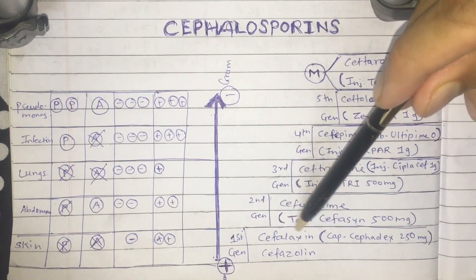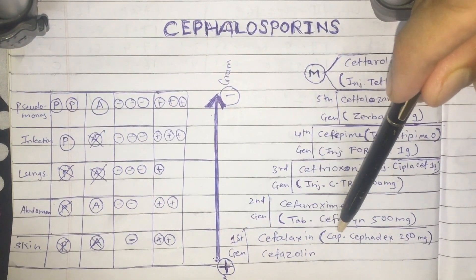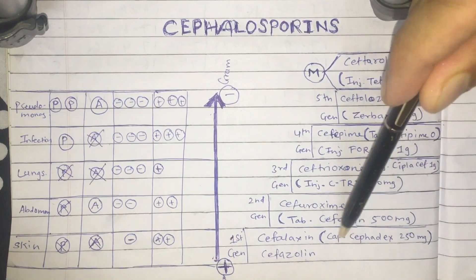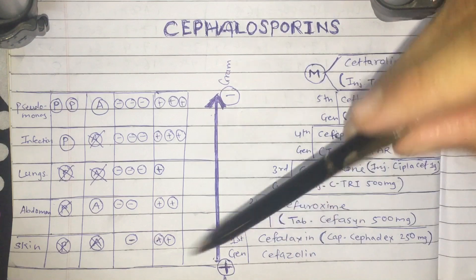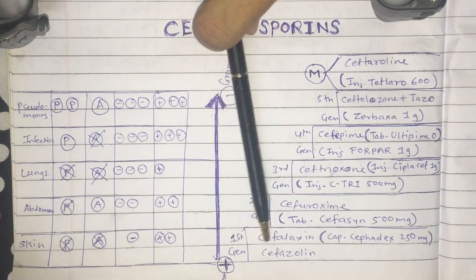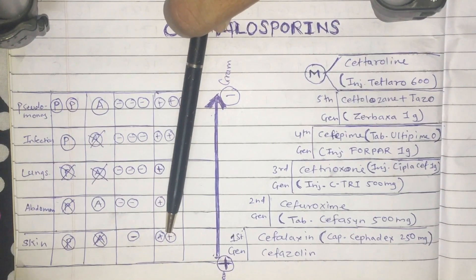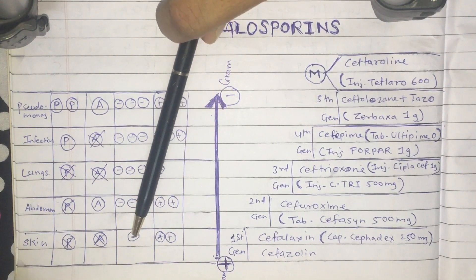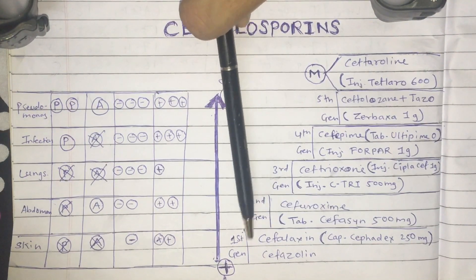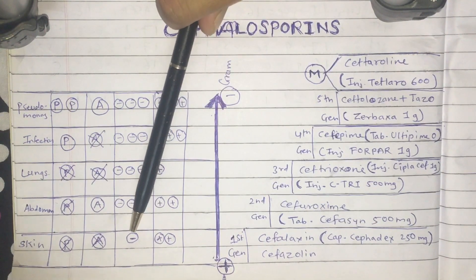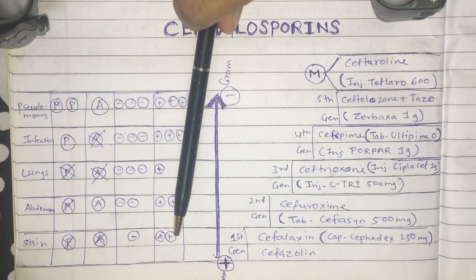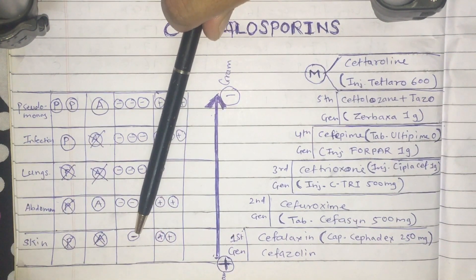For the first generation cephalosporins, we have Cephalexin, available as capsule Cephadex 250 mg for adults and 125 mg for children. The first generation cephalosporins show strong activity — indicated by two plus signs — against gram-positive bacteria, but have a negative sign for gram-negative bacteria, meaning they do not act well on gram-negative organisms.